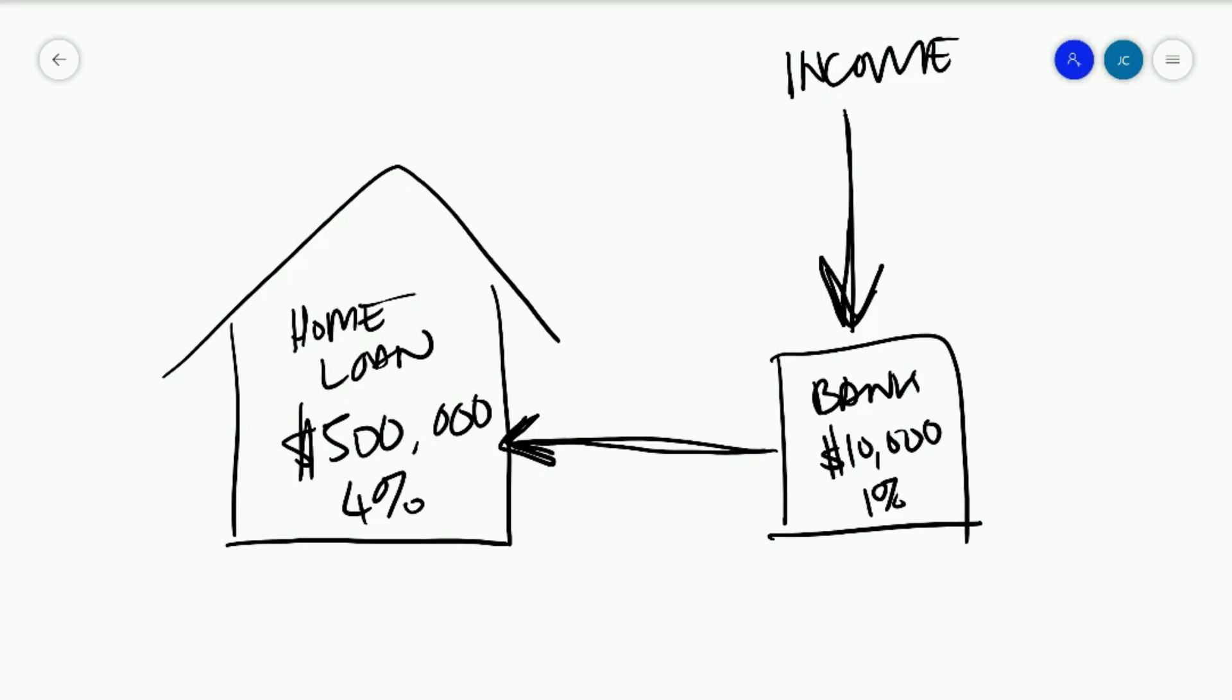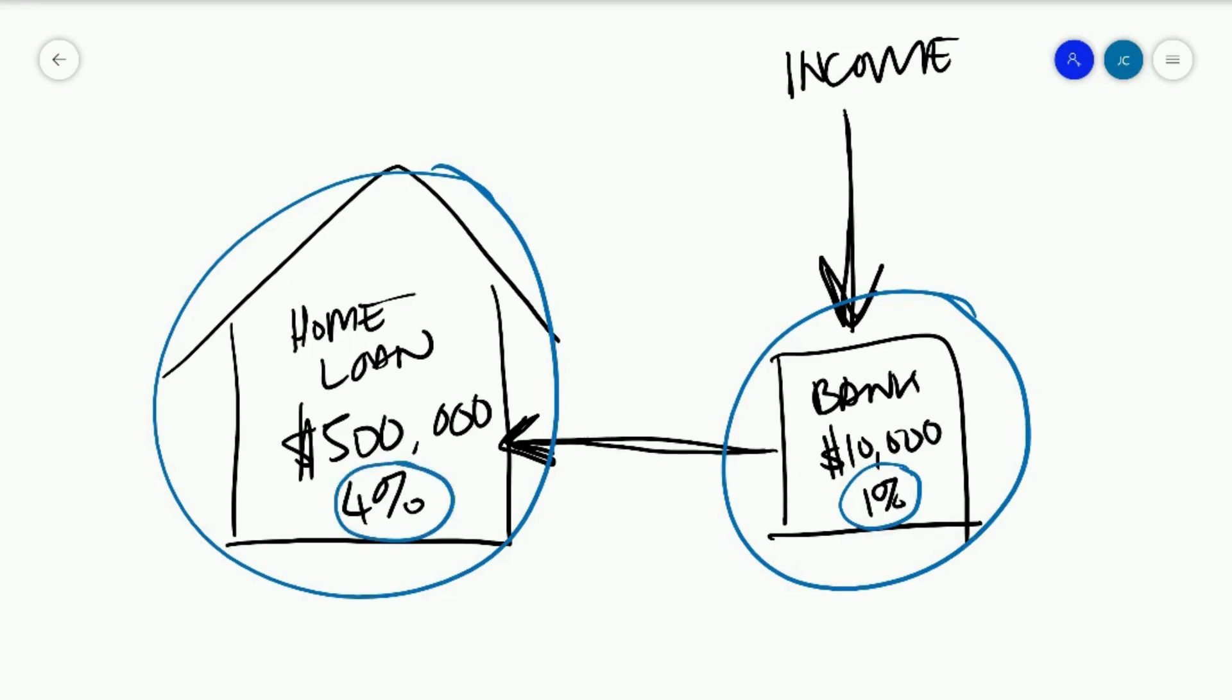And so in this bank account here, they earn the 1% on the $10,000. But on the home loan over here, they pay the 4% on the $500,000.